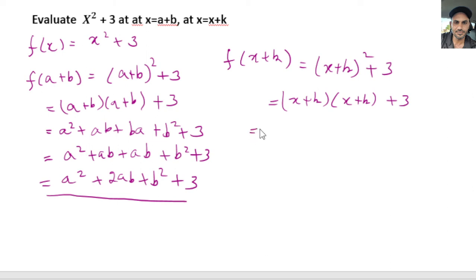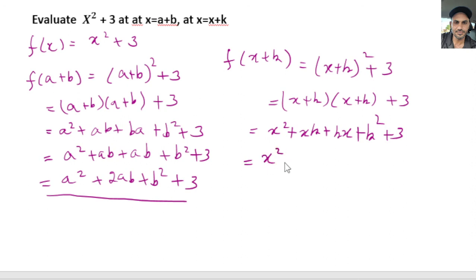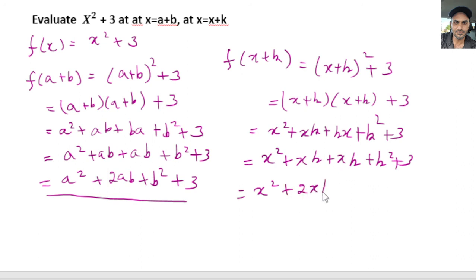Then you go ahead and multiply the terms inside: x times x is x squared, x times k is xk, and k times x is kx, and k times k is k squared, plus 3. Then we go ahead and rearrange: we have x squared, and then we add xk plus kx which is 2xk, and then k squared plus 3. So f(x + k) = x² + 2xk + k² + 3.